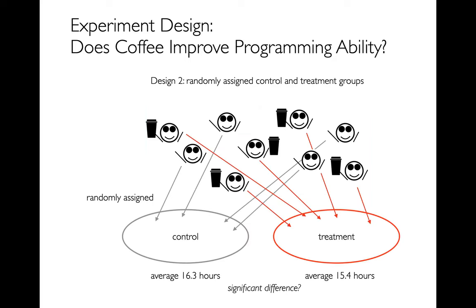A common way to handle this is to take your population of programmers and divide them upfront into two groups: a control group and a treatment group. It's very important to randomly assign people, otherwise you might assign all the good programmers to the same group. If you give the treatment group Copilot and nothing to the control group, you can measure the difference — maybe 16.3 hours for control and 15.4 hours for treatment. The big question is whether that difference is noise or a meaningful significant signal.